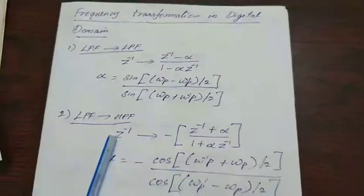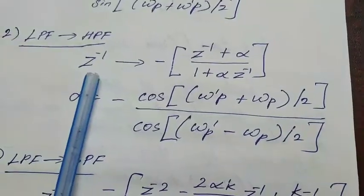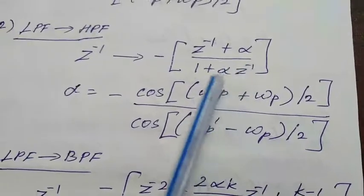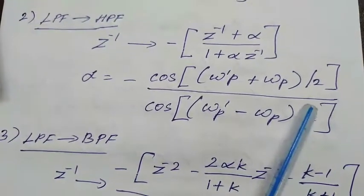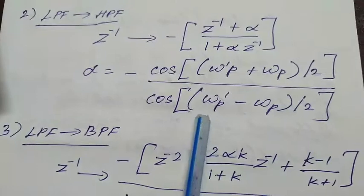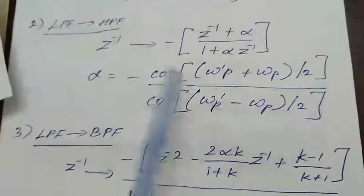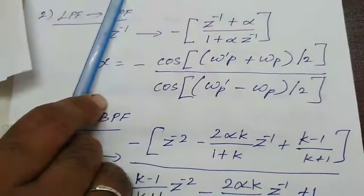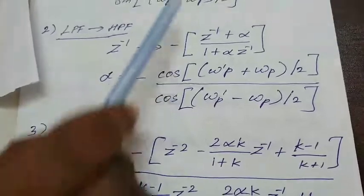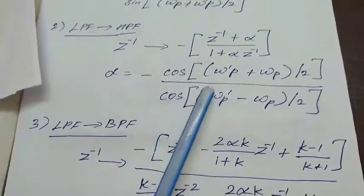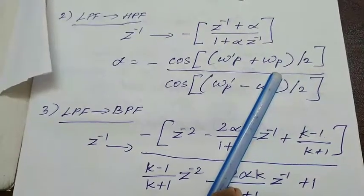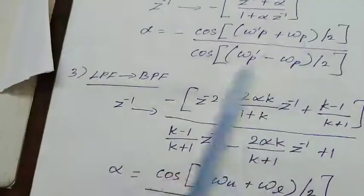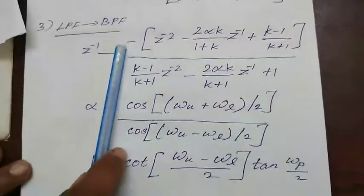The second transformation is low-pass to high-pass. In this case, z-inverse is replaced by: minus (z-inverse plus alpha) divided by (1 plus alpha·z-inverse), where alpha equals minus cosine of (omega_p_dash plus omega_p divided by 2), divided by cosine of (omega_p_dash minus omega_p divided by 2). Note that for low-pass we use sine, whereas for high-pass we use cosine, and the terms are interchanged. Here omega_p_dash is the passband frequency of the new high-pass filter and omega_p is the passband frequency of the existing low-pass filter.